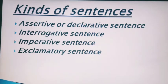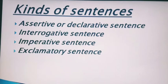Now let's come to kinds of sentences. There are four kinds of sentences in your chapter. First is assertive, which is also called declarative sentence. Second is interrogative sentence. Third is imperative sentence. And fourth one is exclamatory sentence.